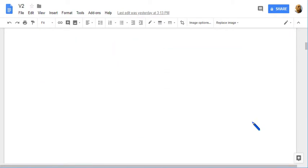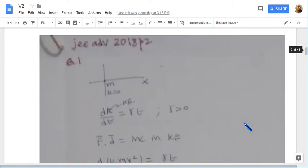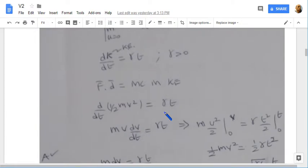And here is the solution. The particle of mass m is at rest, u equal to 0, at origin. The variation in kinetic energy is given as this. There is a force acting on this particle.